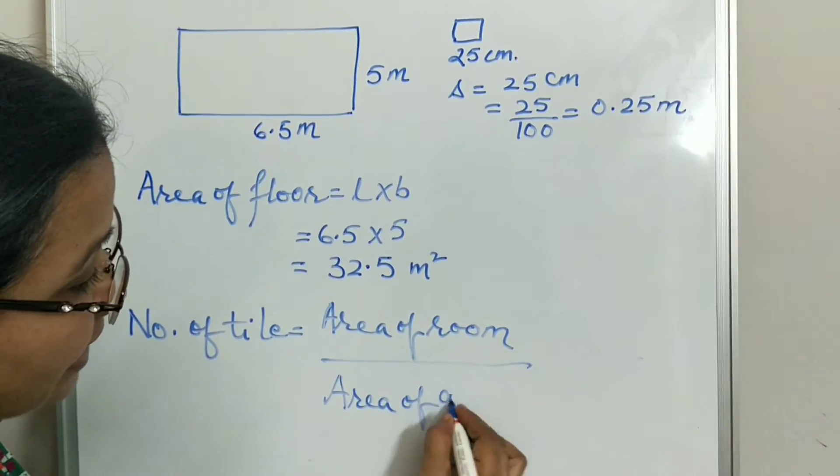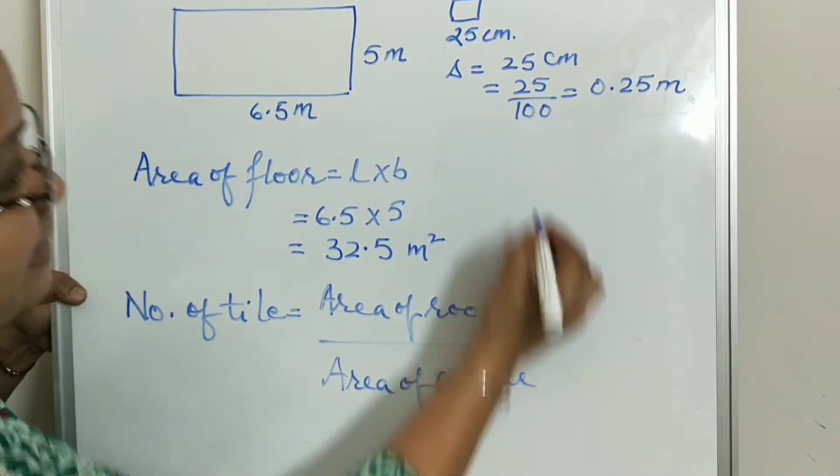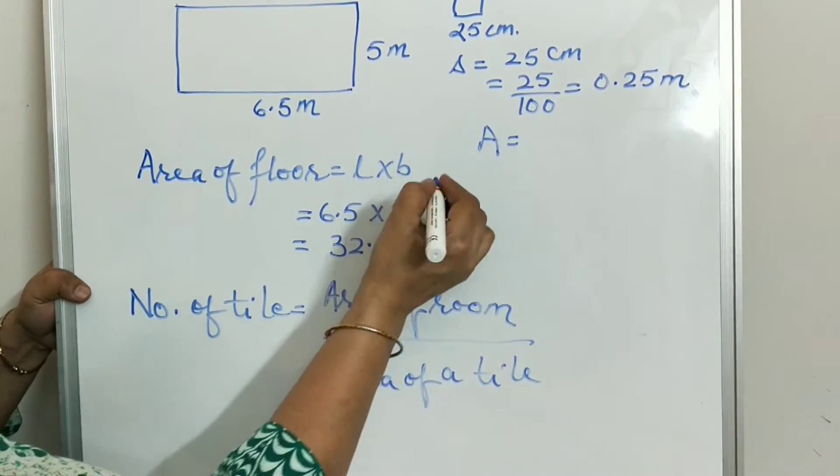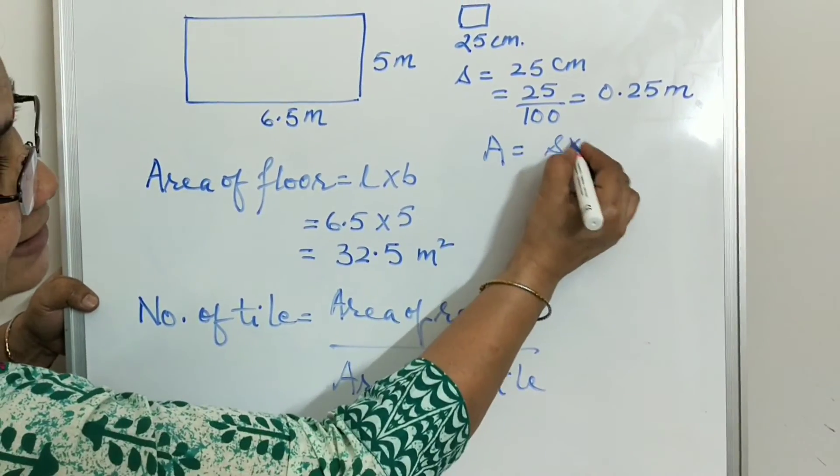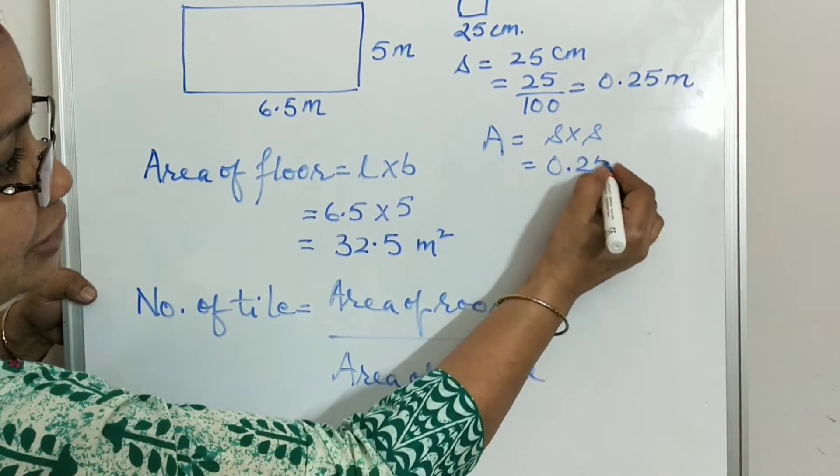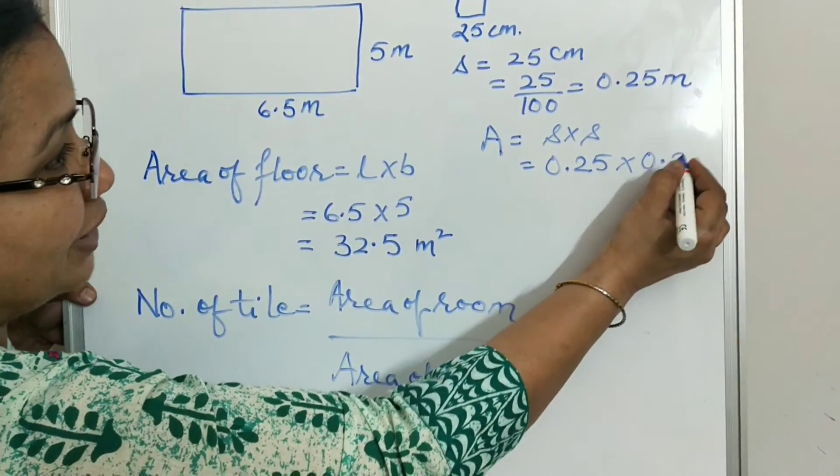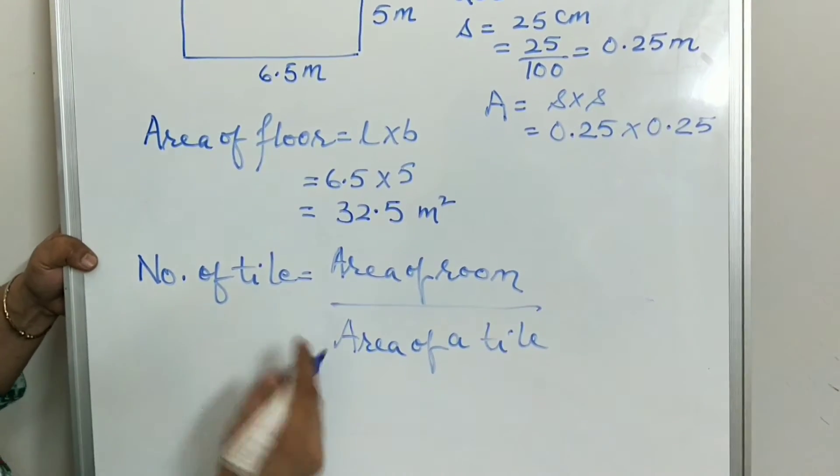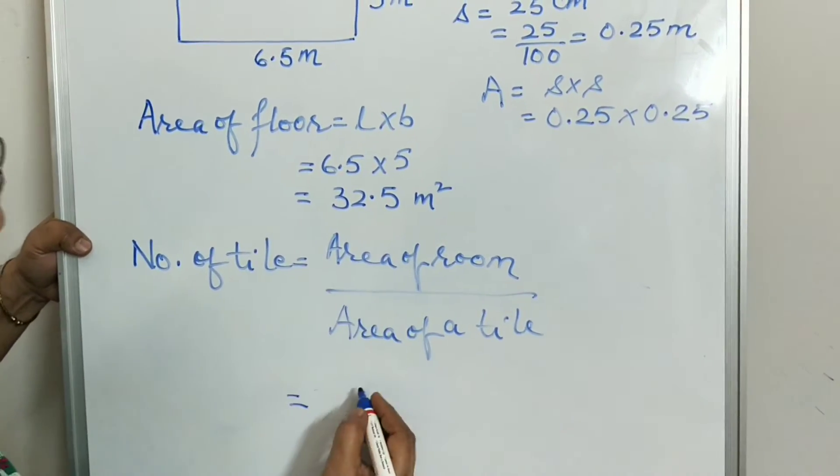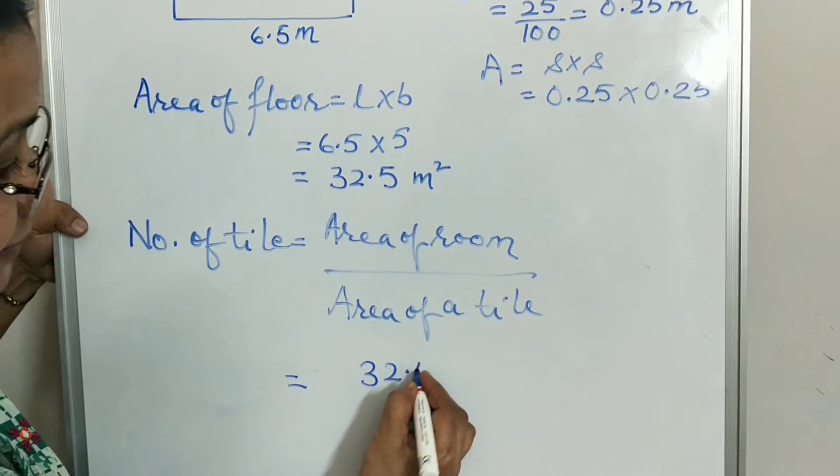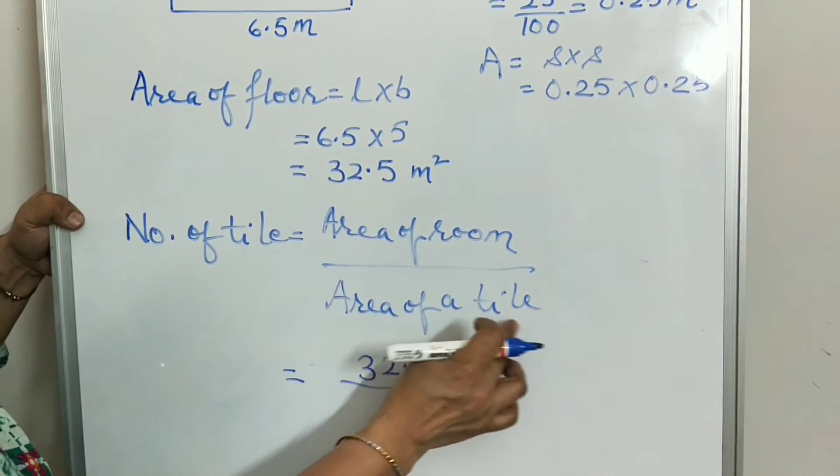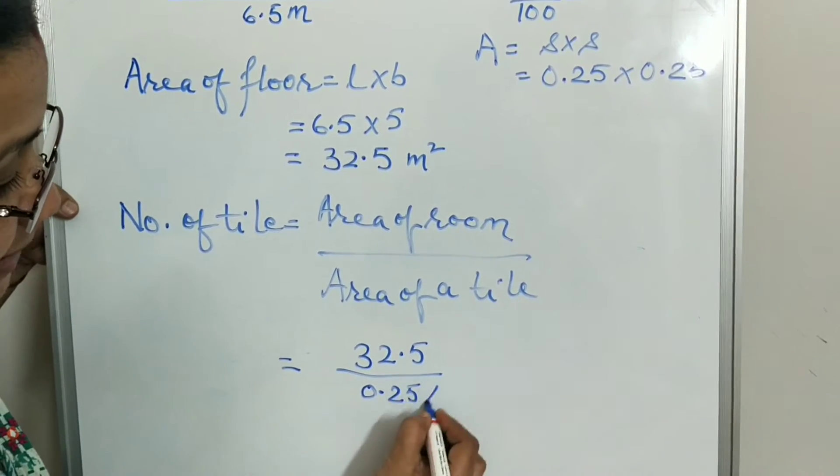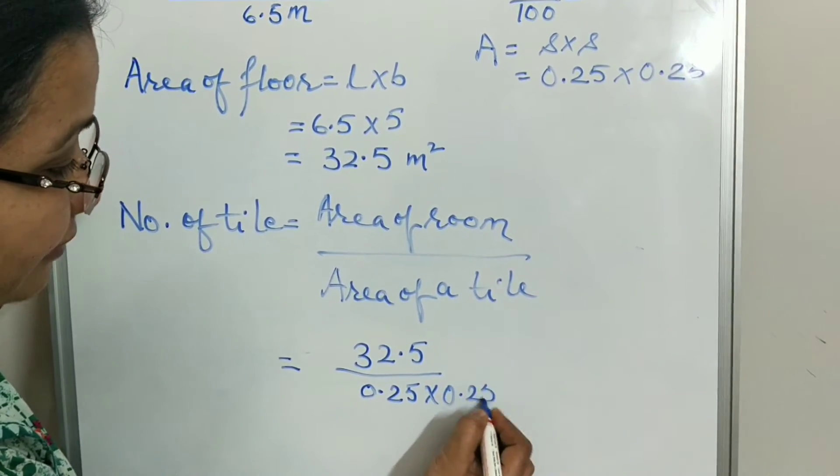Area of a tile. When we have the side, for square tile, we will find the area. Area is equal to side into side. That means 0.25 multiply 0.25. We need to find number of tiles. So area of room is 32.5 and we divide by area of a tile, that means 0.25 multiply 0.25.